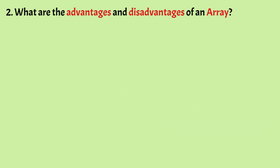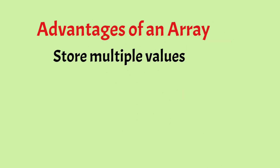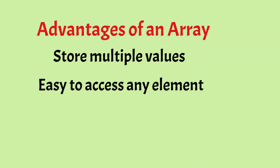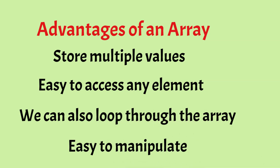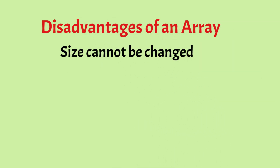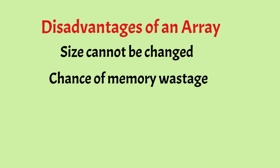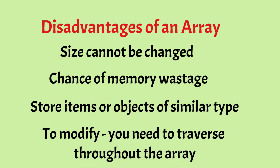What are the advantages and disadvantages of an array? Advantages: an array can store multiple values in a single variable; it is easy to access an element randomly using the index; we can loop through the array using the index to access elements quickly; and it is easy to manipulate and store large data. Disadvantages: the size of the array cannot be changed; due to its fixed size, there is a chance of memory wastage; only items of similar type can be stored; and modifying elements requires traversing the entire array, which increases time complexity.